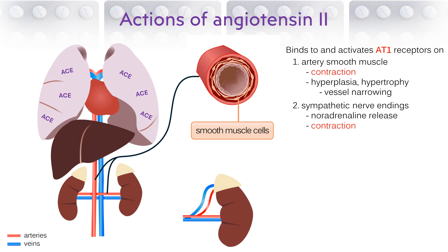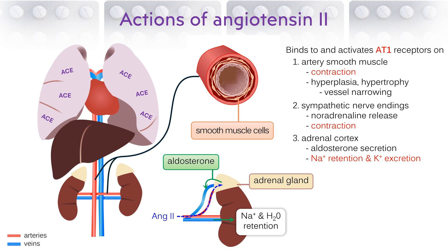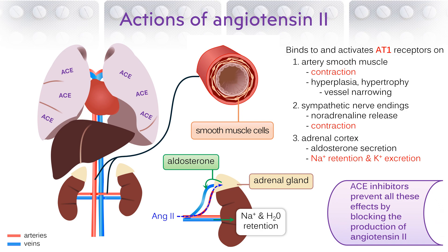Now let's turn to the kidney. It is affected indirectly by angiotensin 2. The direct effect of angiotensin 2 is on the adrenal glands, which sit just above the kidneys. As circulating angiotensin 2 reaches the cortex of the adrenal gland, it activates AT1 receptors, which stimulate secretion of the steroid hormone called aldosterone. When aldosterone reaches the kidney, it stimulates the retention of sodium and water, while increasing the excretion of potassium. The result is an increase in plasma volume, which in turn increases cardiac output, and this also leads to a rise in blood pressure. All of the effects described here are suppressed by ACE inhibitors.